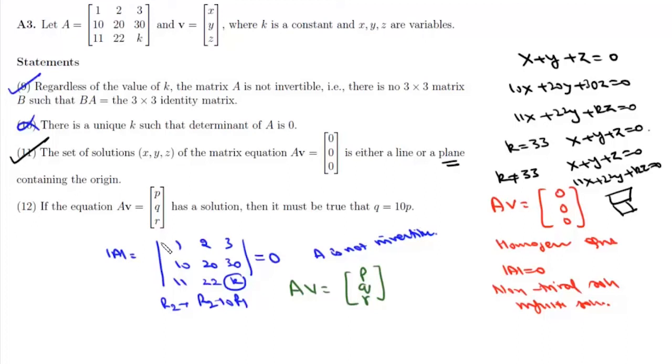Writing equations for the first two rows, we get x + 2y + 3z = p, and from the second row, 10x + 20y + 30z = q. Multiplying the first equation by 10, we get 10x + 20y + 30z = 10p.